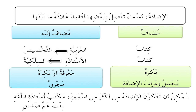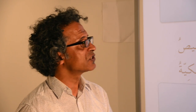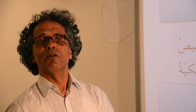Look at the examples. كتاب العربية — in this case كتاب is مضاف and العربية is مضاف إليه. This إضافة is used for what's called تخصيص, meaning specification. In other words: a book of what? A book of Arabic, specifically.